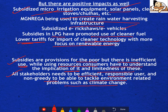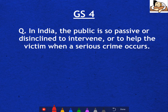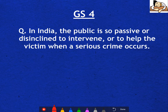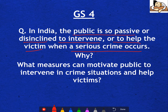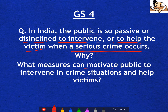In India, the public is often passive or disinclined to intervene or to help the victim when a serious crime occurs. The question asks: why? And what measures can motivate people to intervene in crime situations and help victims?